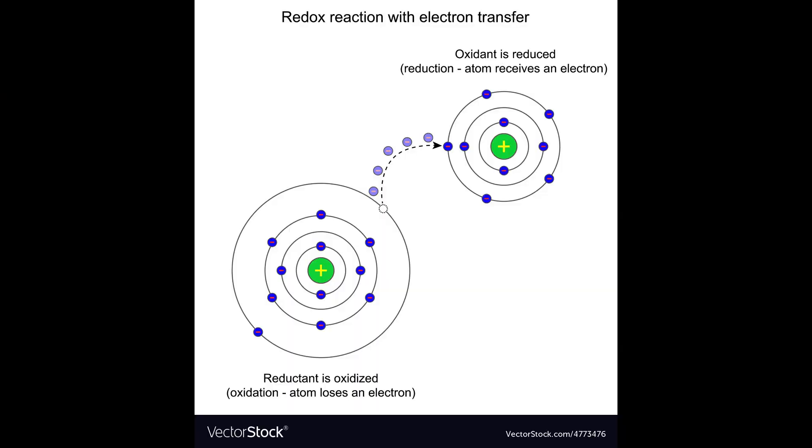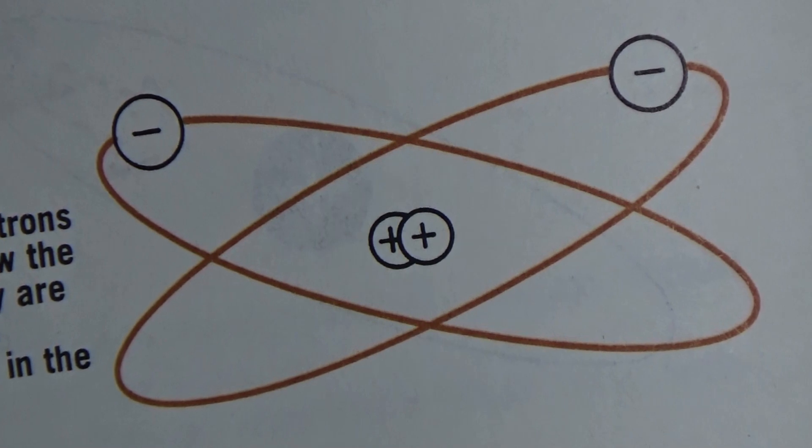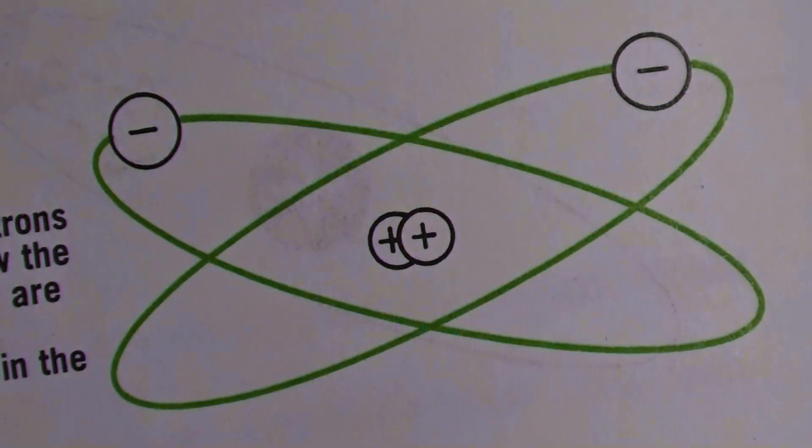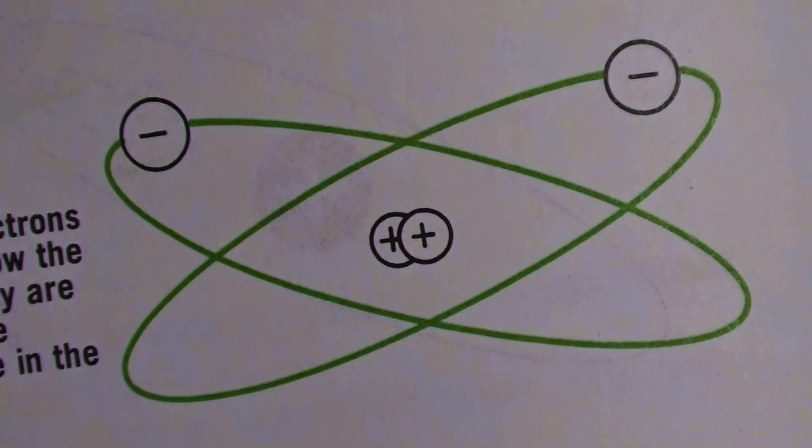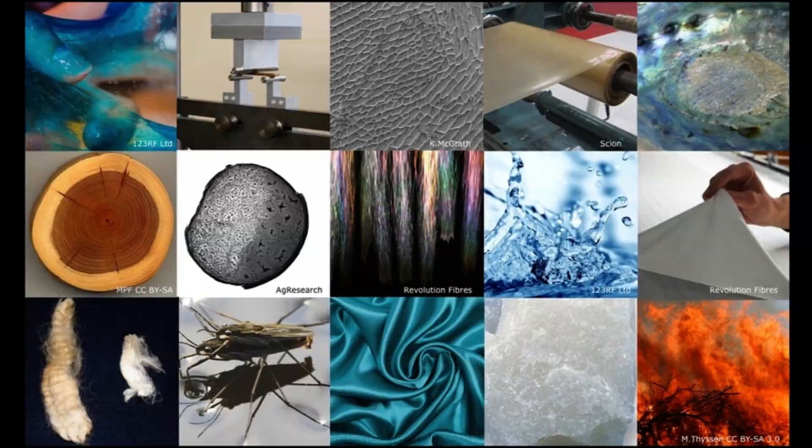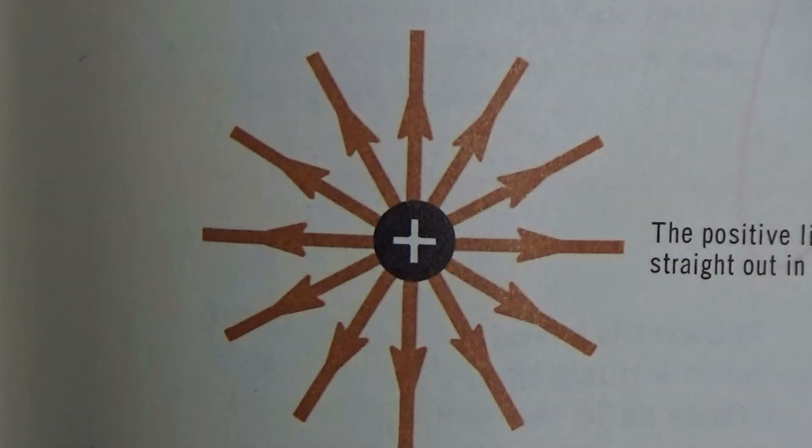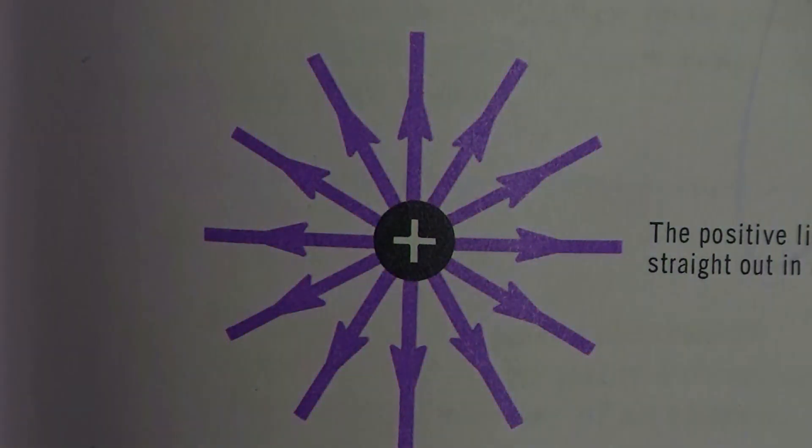Electricity is a specific transfer of energy from atom to atom, or from compounds and molecules, by way of electric fields. The electric fields come from particles that make up the internal structure of the atom. These particles are known as protons and electrons, and are found in all materials. The proton is found at the nucleus of the atom, is positively charged, and produces positive lines of force that go straight out from the proton in all directions.